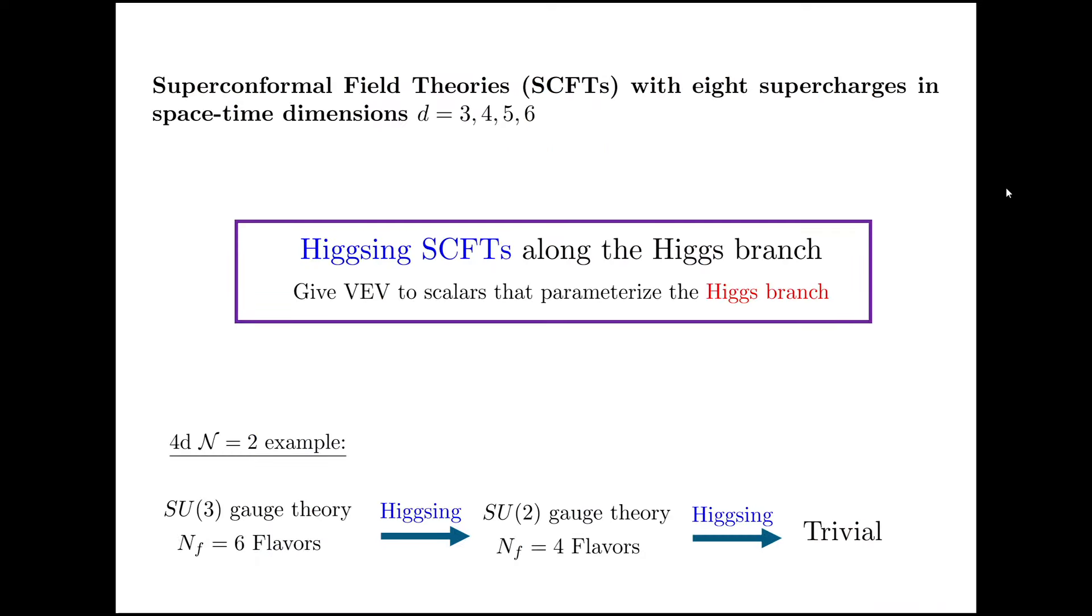I'm interested in superconformal field theories, or SCFTs, with eight supercharges in space-time dimensions 3, 4, 5, and 6. For these theories, I would like to Higgs them along the Higgs branch. So it's just Higgs mechanism, but rather than giving VEV to any scalars in the theory, I'm only giving VEV to the scalars that parameterize the Higgs branch.